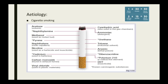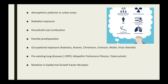Coming to the etiology of lung cancer, cigarette smoking is the single most important factor responsible for 90% of lung cancer cases, and the risk increases with the amount of cigarette smoke per day. Cigarettes contain various carcinogenic substances like acetone, naphthalene, methanol, carbon monoxide, vinyl chloride, arsenic, etc. Other risk factors include atmospheric pollution in urban areas, radiation exposure, household coal combustion, and there is also familial predisposition to lung tumors.